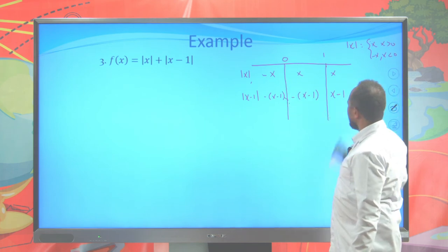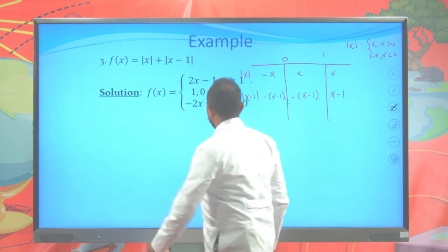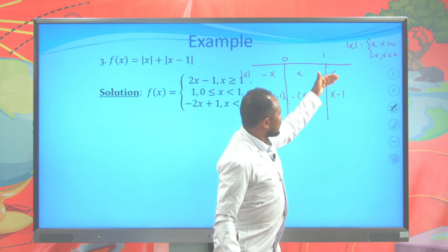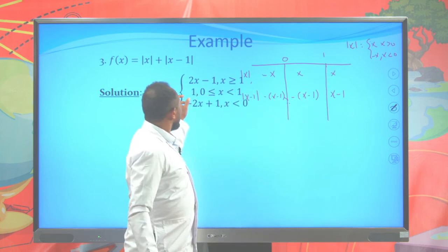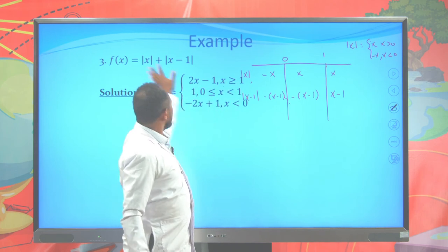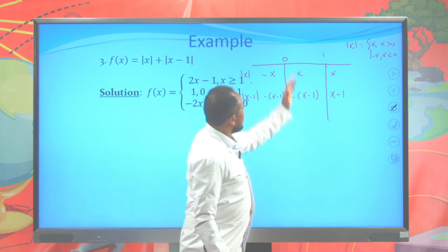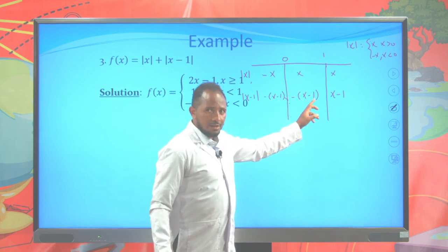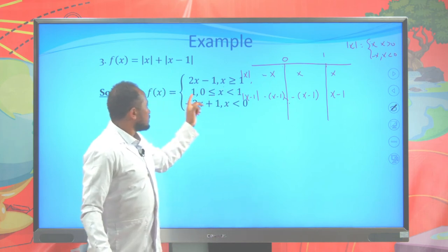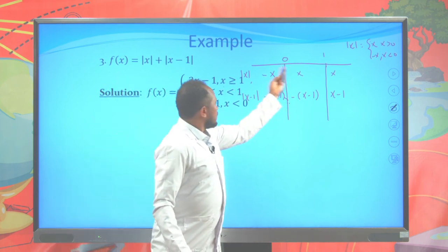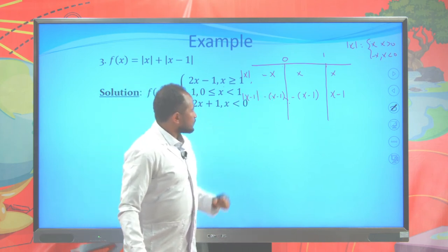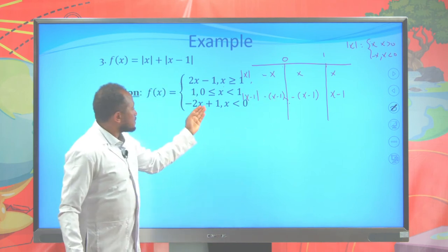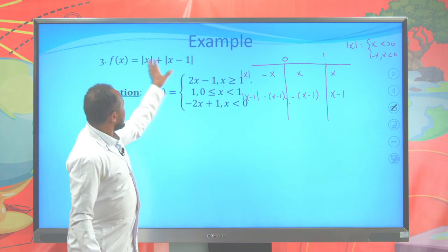Combining the pieces: for x greater than or equal to 1, the sum of x and x minus 1 gives 2x minus 1. Between 0 and 1 exclusive, the sum of x and negative of x minus 1 gives x plus negative x plus 1, which equals 1. For x less than 0, adding negative x and negative of x minus 1 gives negative x plus negative x plus 1, which is minus 2x plus 1. So f of x is this piecewise function.